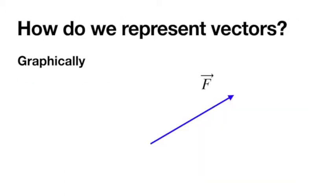We're going to talk about how to represent vectors first graphically, which is just visually in drawings — just an arrow. It's a pretty intuitive way to see it: the direction is just where the arrow is pointing. So if I want a vector that points northeast, I'll draw an arrow that points northeast. The magnitude is just that vector's length — a longer vector has a greater magnitude, a shorter vector has a smaller magnitude.